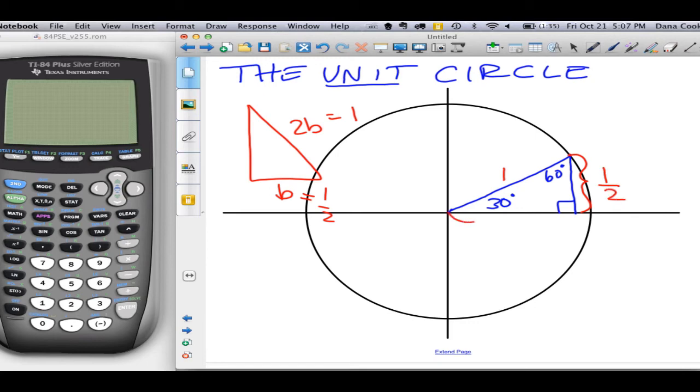And the measure of this x component, or the longer leg opposite the 60 degree angle, is 1 half times the square root of 3. But I'm going to tell you, we're going to write it in this manner. We're going to multiply it out and have the square root of 3 over 2.